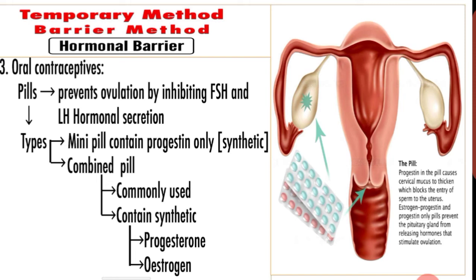Oral contraceptive pills play a vital role. The pills prevent ovulation by inhibiting FSH and LH hormone secretion. When a woman takes oral contraceptive pills, it prevents ovulation because FSH and LH hormone secretion is suppressed, and without them, ovulation does not occur.